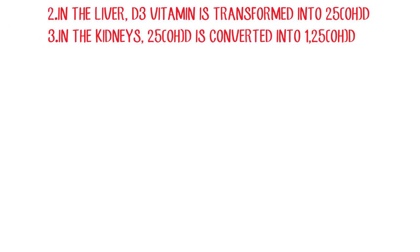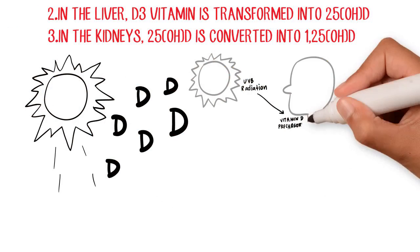2. In the liver, D3 vitamin is transformed into 25-OHD.